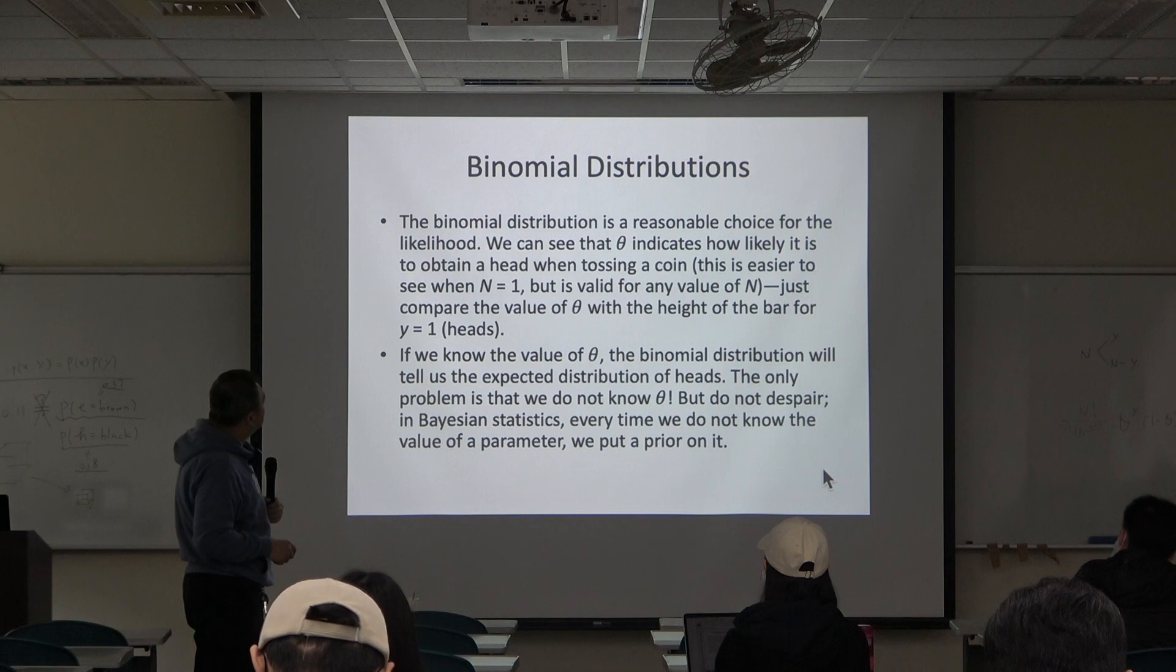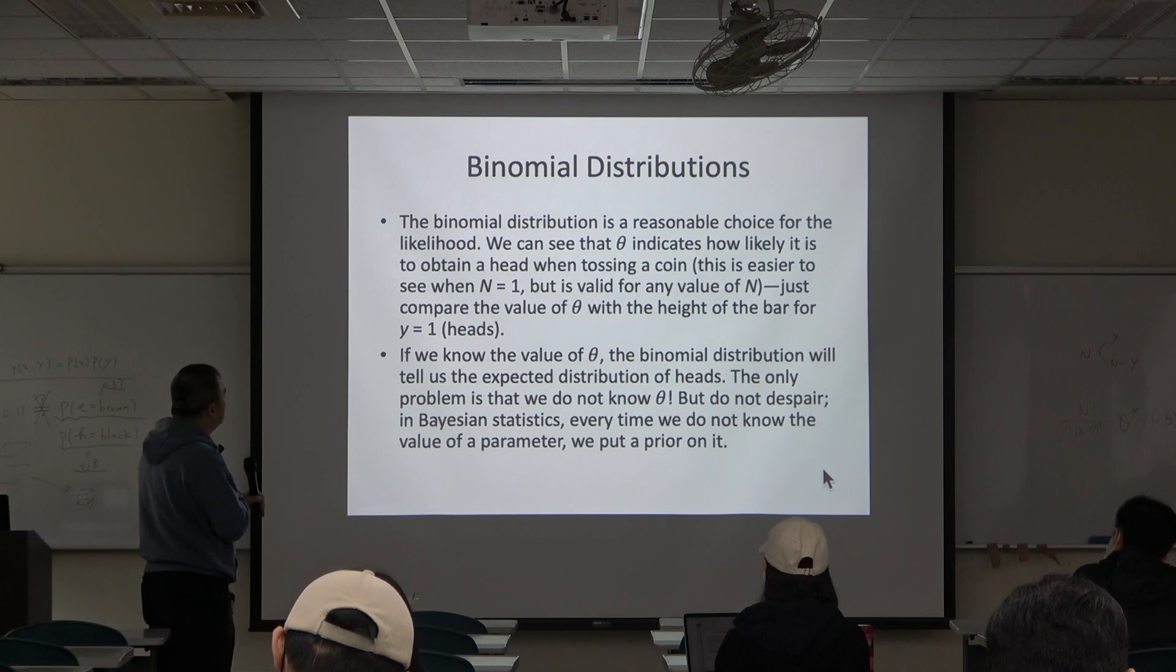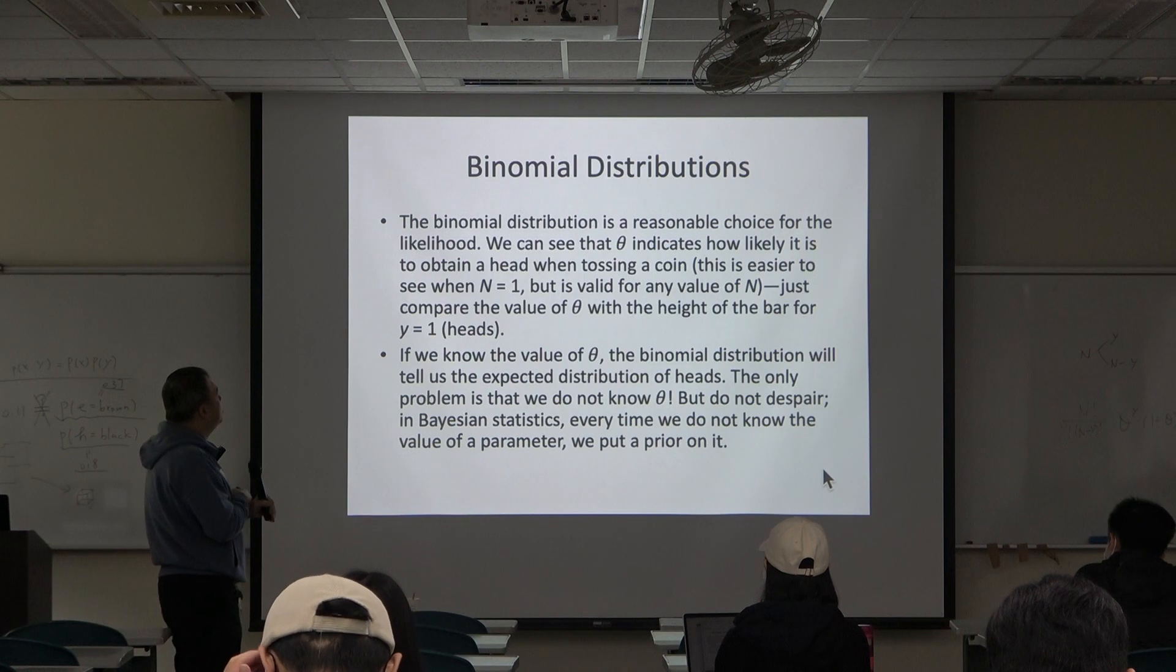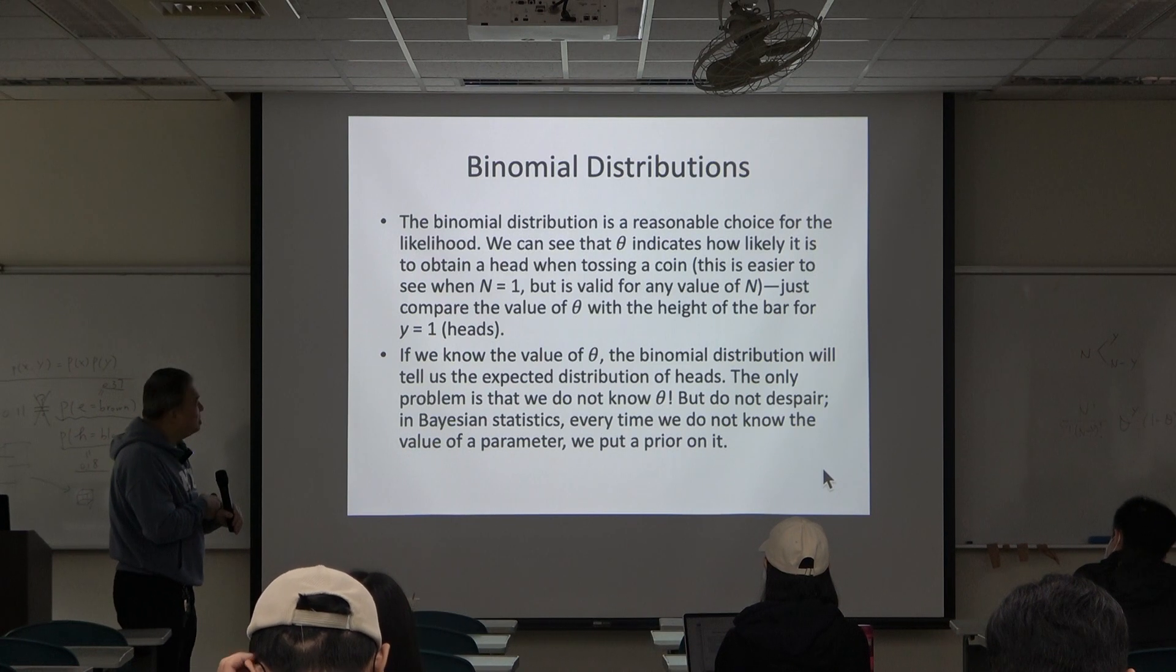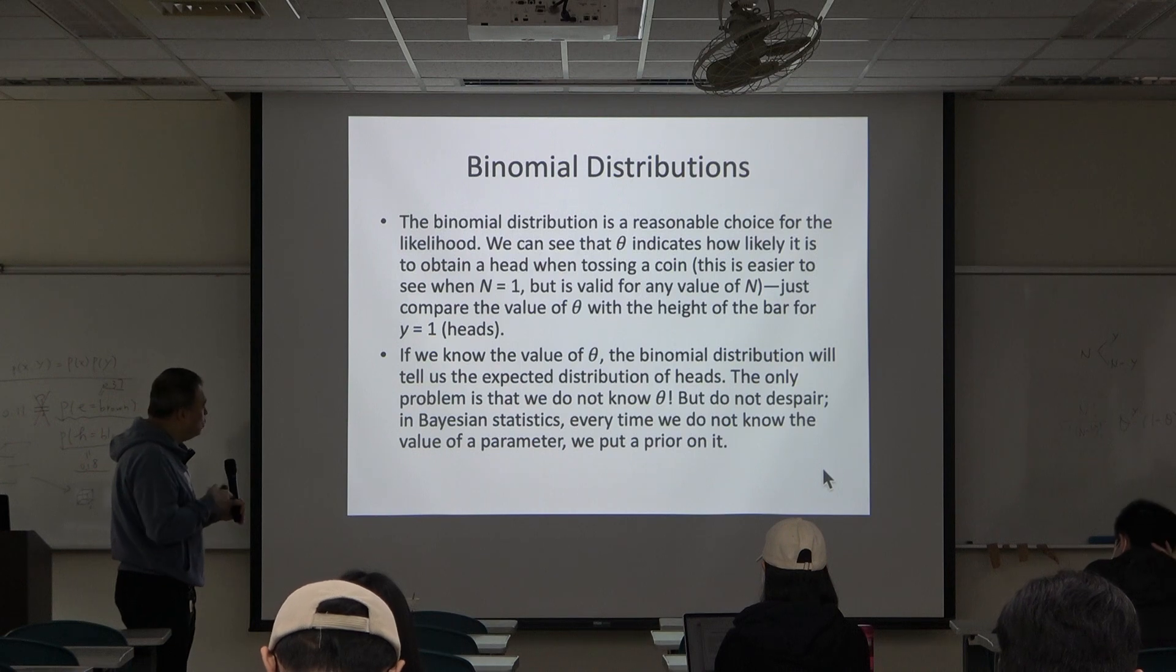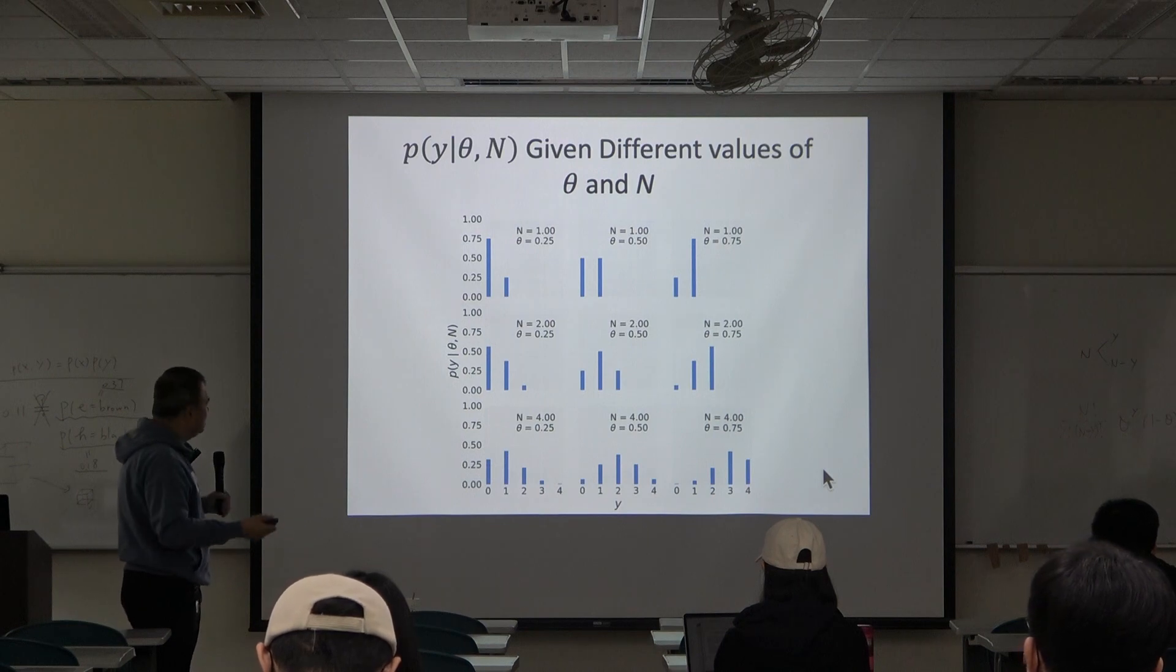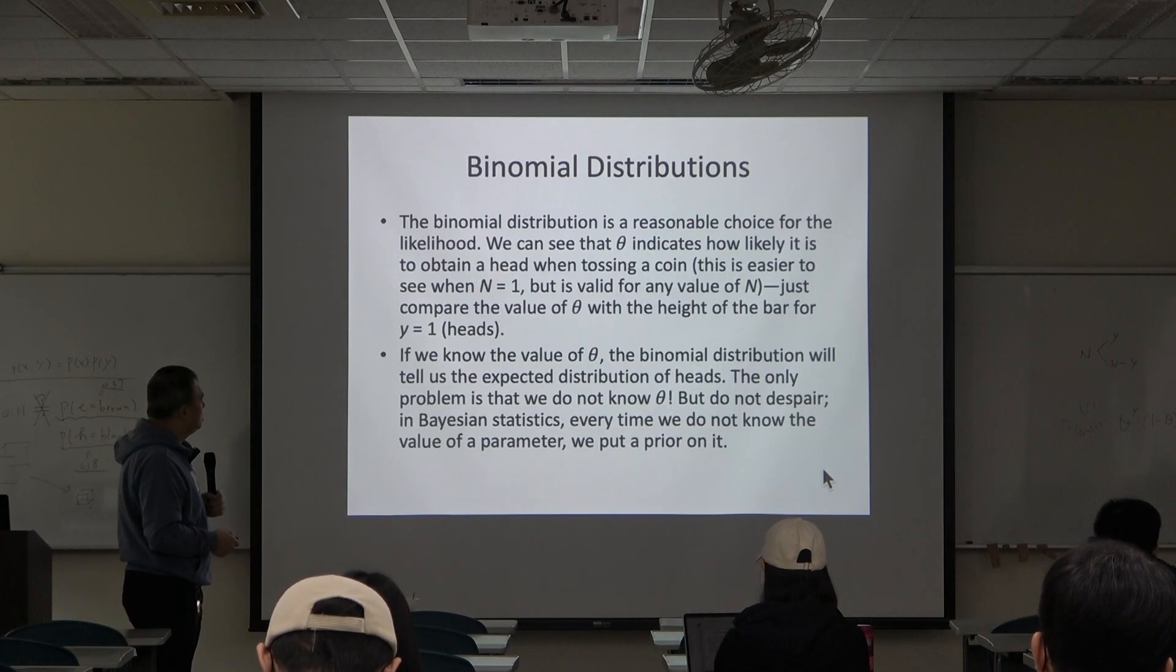Binomial distribution is a reasonable choice for likelihood. We can see that theta indicates how likely it is to obtain a head toss. Just compare the value of theta with the height of the bar for y equal to one. From the upper row, you can see it's reasonable.